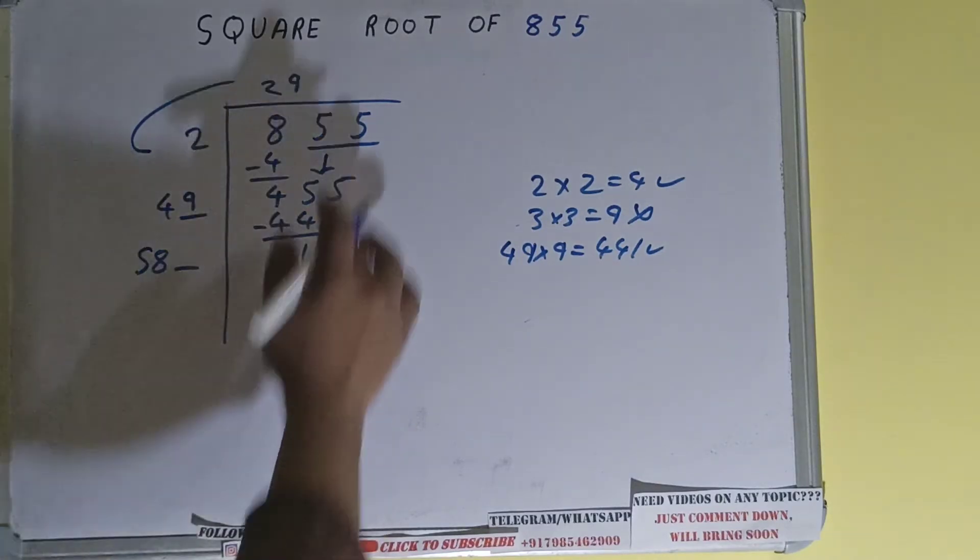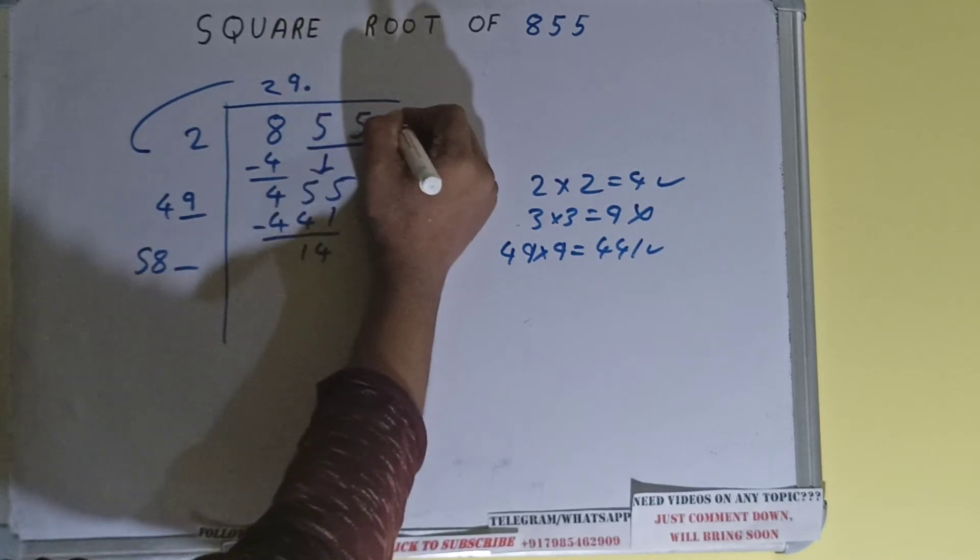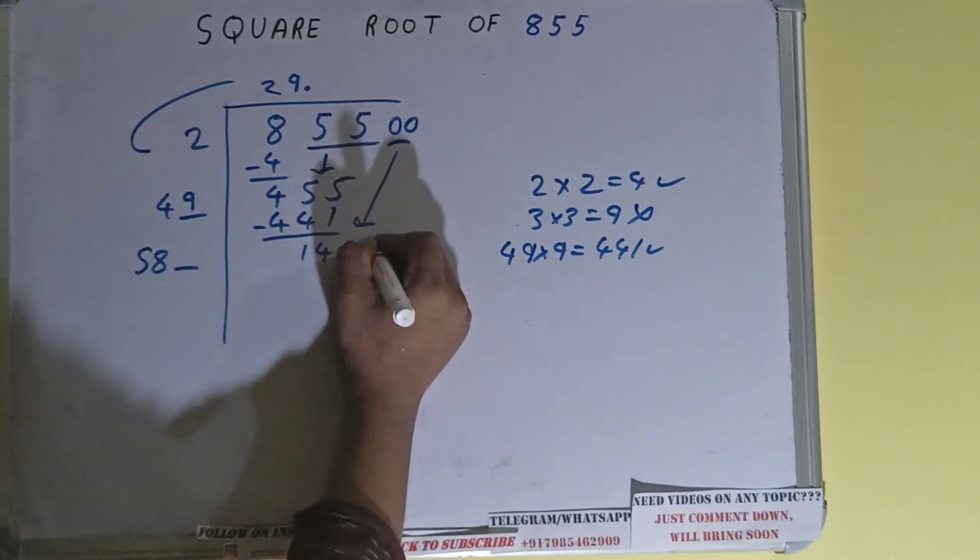And this number we need to make it big, but we don't have more pairs so we put decimal. Once I put decimal we can bring a pair of zeros down and it will become 1400.